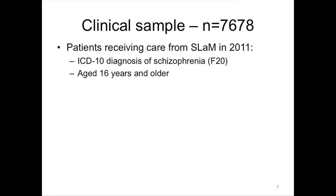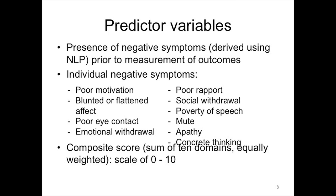We selected just over 7,600 patients with schizophrenia aged over 16 receiving care in 2011. We developed 10 different NLP applications for a series of negative symptoms using a machine learning approach, looked at these individually, and then put them into a composite score from 0 to 10, weighting each symptom equally.